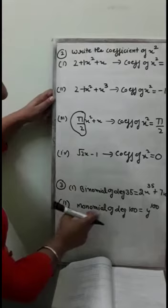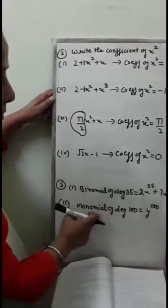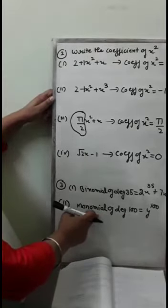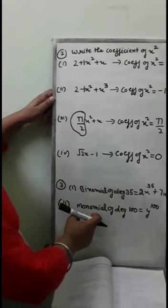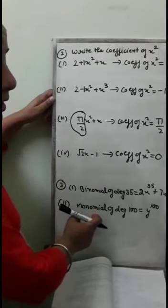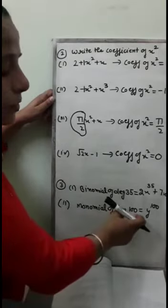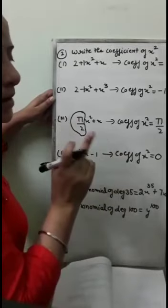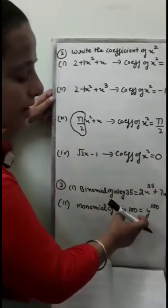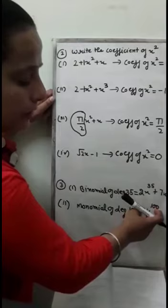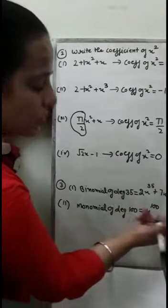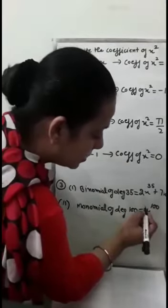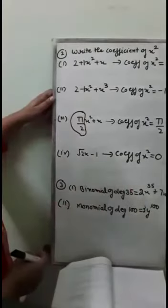In the second part, a monomial of degree 100. Monomial means one term, and degree means the highest power of the variable should be 100. You need to write only one term with power 100. For example, y raised to power 100, or 3y raised to power 100.